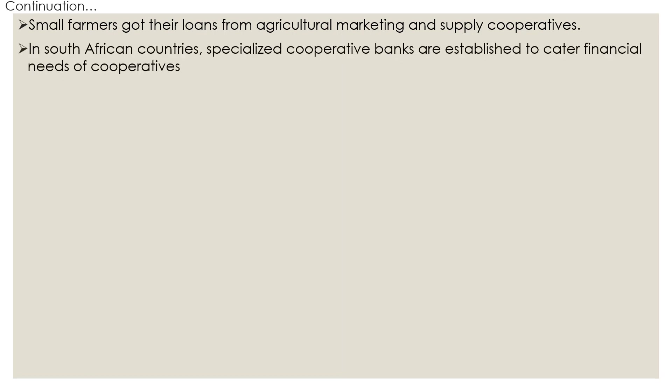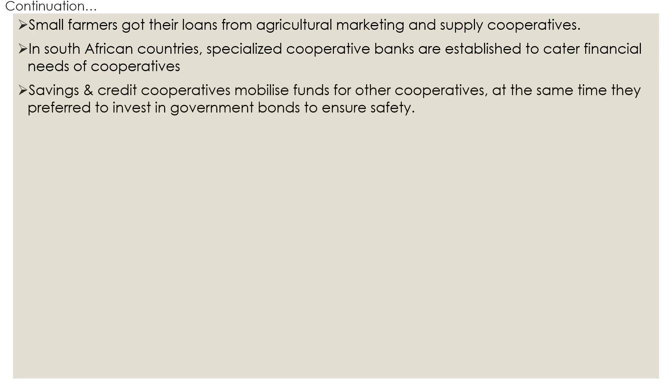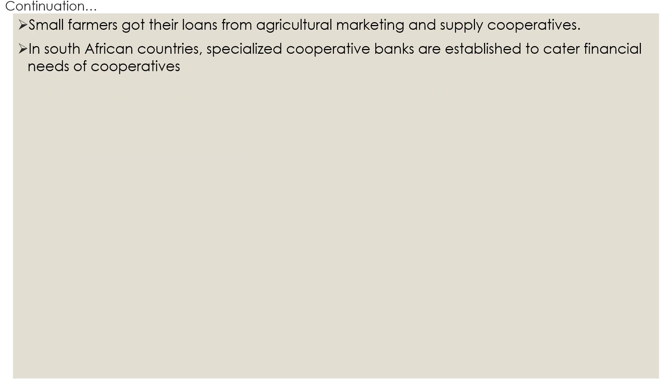Small farmers got their loans from agricultural marketing and supply cooperatives, which distributed loans received from development banks to their members and took repayment on behalf of those banks. In certain eastern and southern African countries, specialized cooperative banks were established to cater to the financial needs of cooperatives, and they became successful only when their doors were opened to the general public.